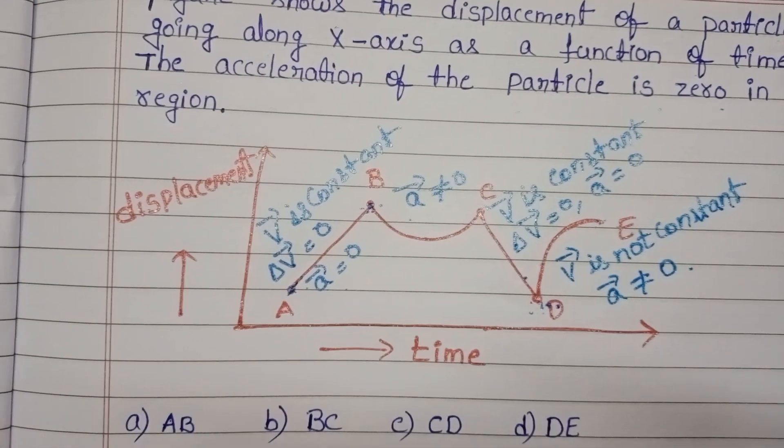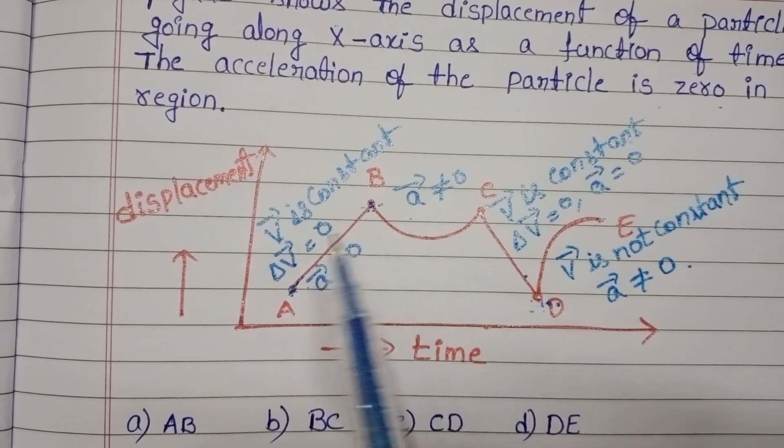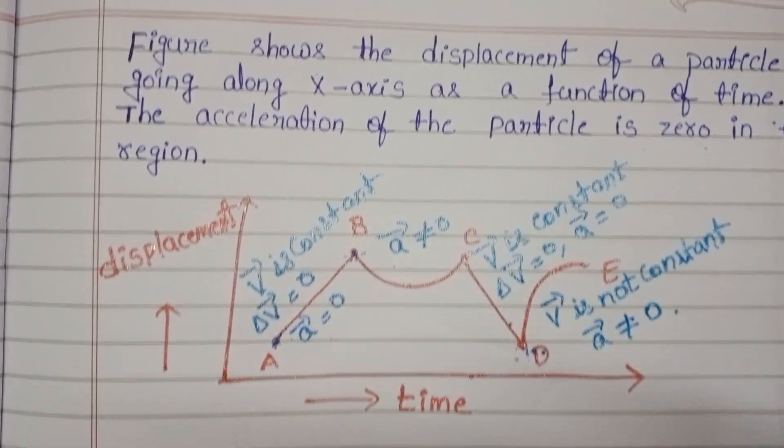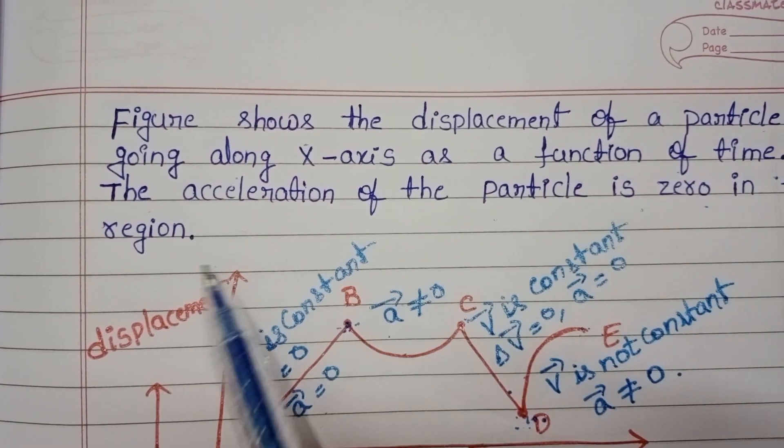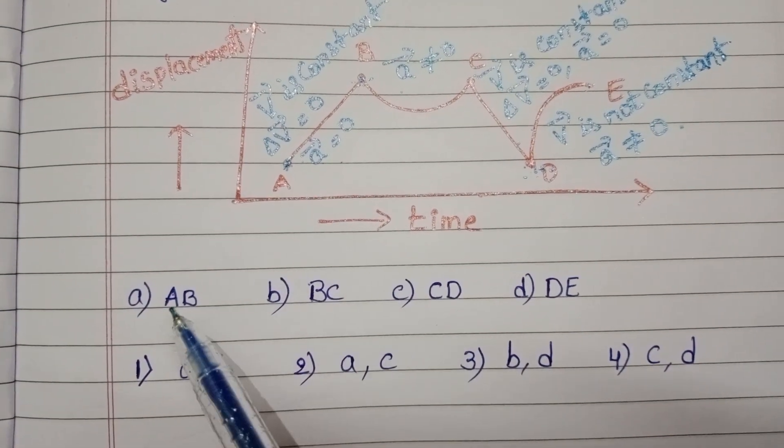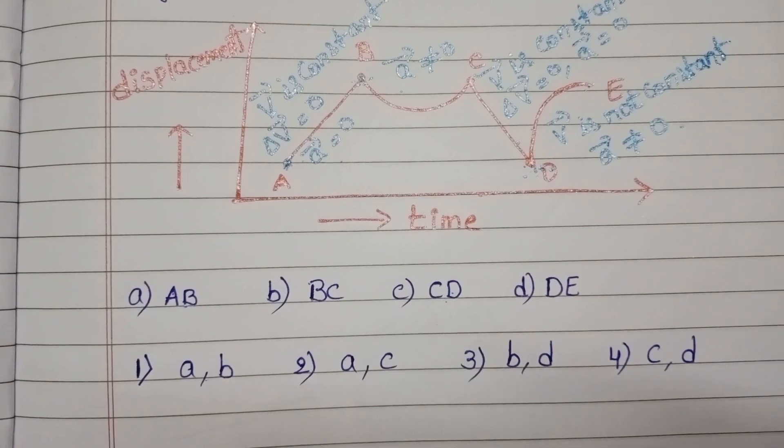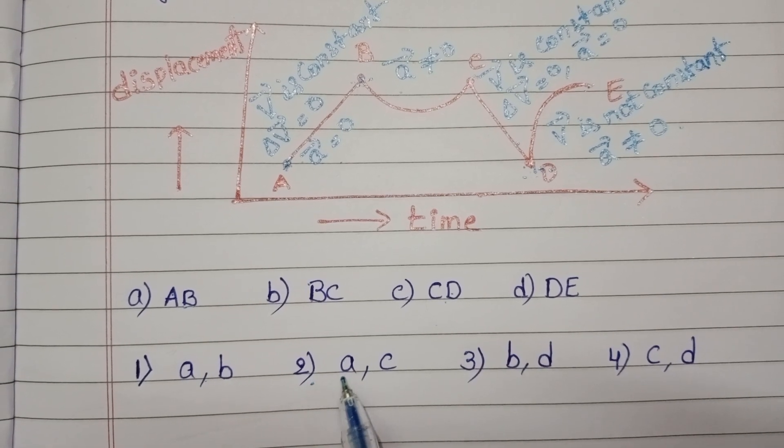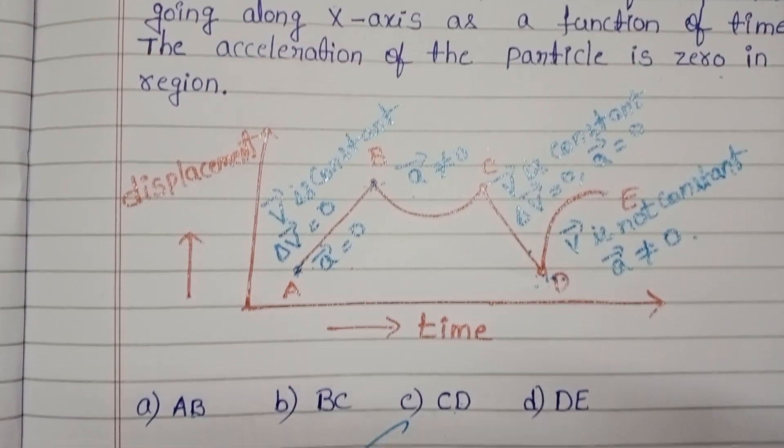So overall in this graph, in two regions acceleration equals zero. The question is, the acceleration of the particle is zero in the region. So check the given options. Here AB and CD, these two are correct only. So in which option are these two there? In second option, A comma C. So second option is the correct answer.